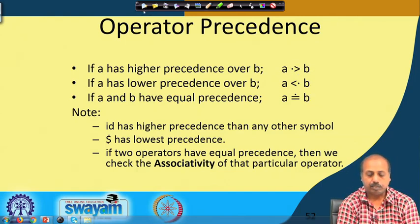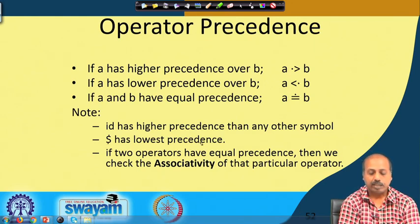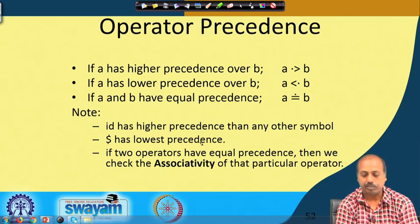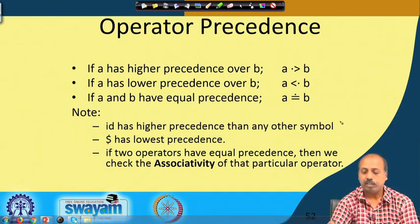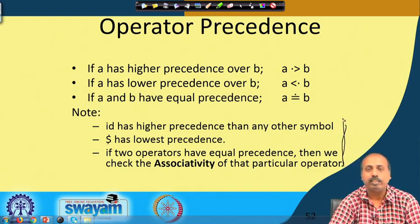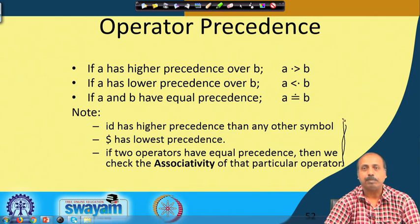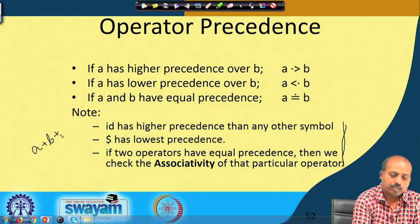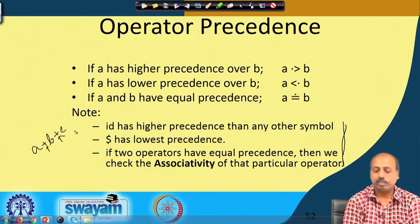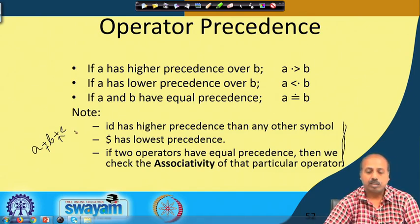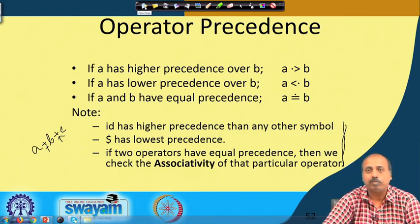Some rules for expressions: an identifier has higher precedence than any other symbol, dollar has the lowest precedence. If two operators have equal precedence, we check the associativity rule. This is true for expressions generally. For example, in A + B + C, the two plus operators are of equal precedence, so we follow the associativity rule. For grammars involving only arithmetic expressions, these rules are valid, and we will see how to decide this precedence for a general grammar as we proceed.